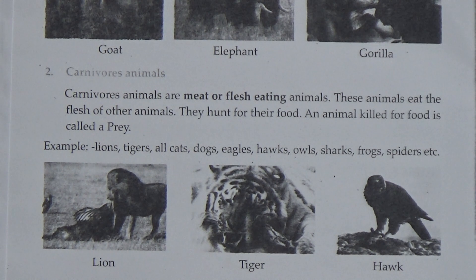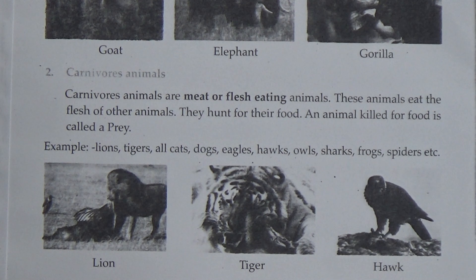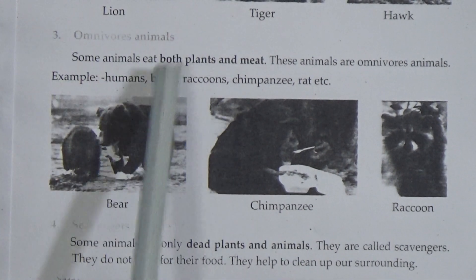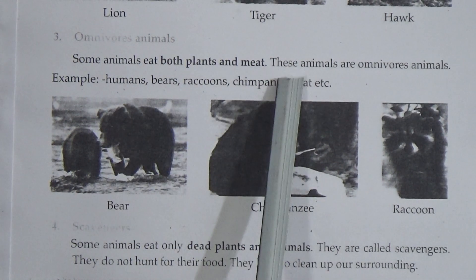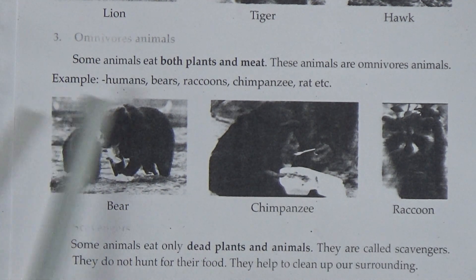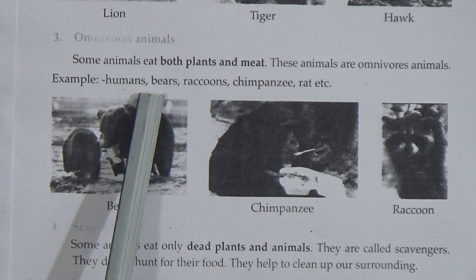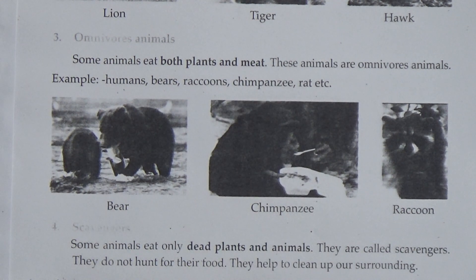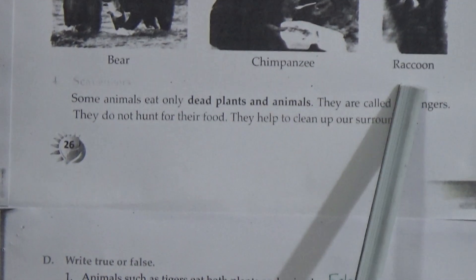Number three is omnivorous animals. Omnivorous spelling is O-M-N-I-V-O-R-E-S. Some animals eat both plants and meat. These animals are omnivorous animals. For example, humans, bear, raccoons, chimpanzee, rat, etc. And here is the picture of bear, chimpanzee, raccoons.